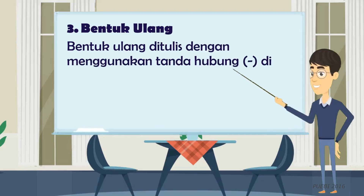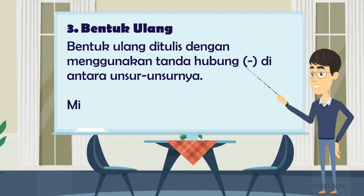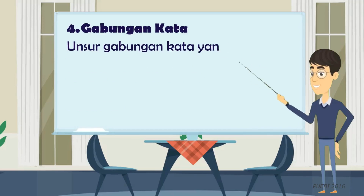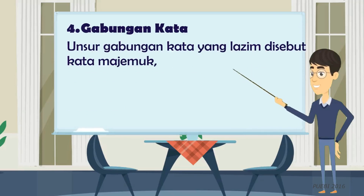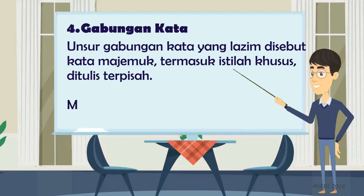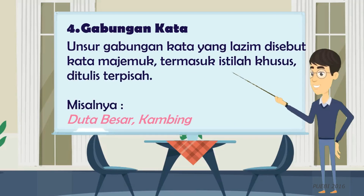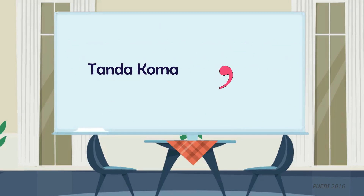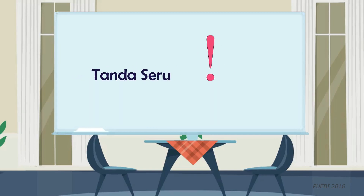Bentuk ulang ditulis dengan menggunakan tanda hubung di antara unsur-unsurnya, misalnya anak-anak, biri-biri. Gabungan kata atau kata majemuk termasuk istilah khusus ditulis terpisah, misalnya duta besar, kambing hitam. Pemakaian tanda baca meliputi tanda titik, tanda koma, tanda titik dua, tanda tanya, tanda seru, tanda elipsis, dan tanda petik.